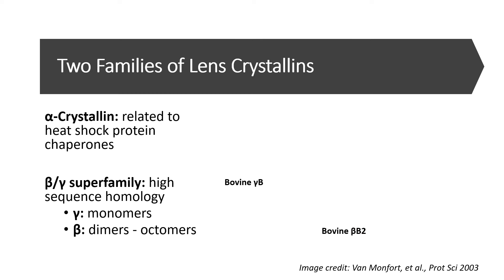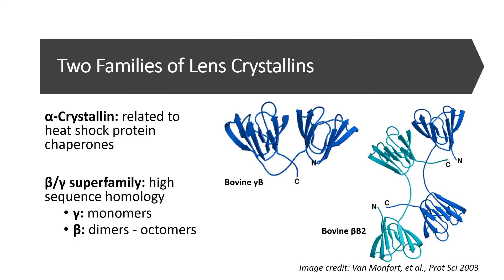There are two families of lens crystallins. The first is alpha crystallin and it's related to the heat shock protein family. The second is a beta-gamma superfamily with high sequence homology. The gammas are usually formed as monomers and the betas are usually formed as dimers all the way up into an octamer.